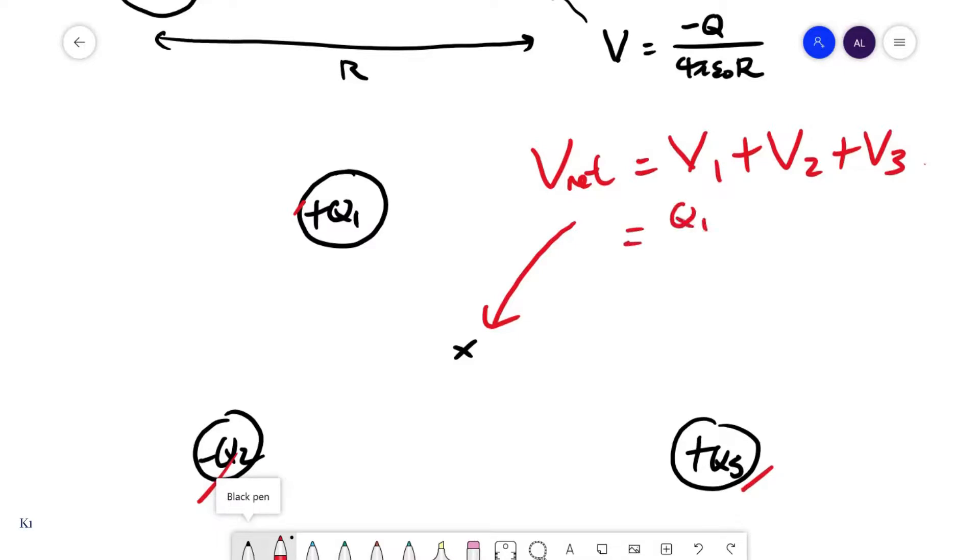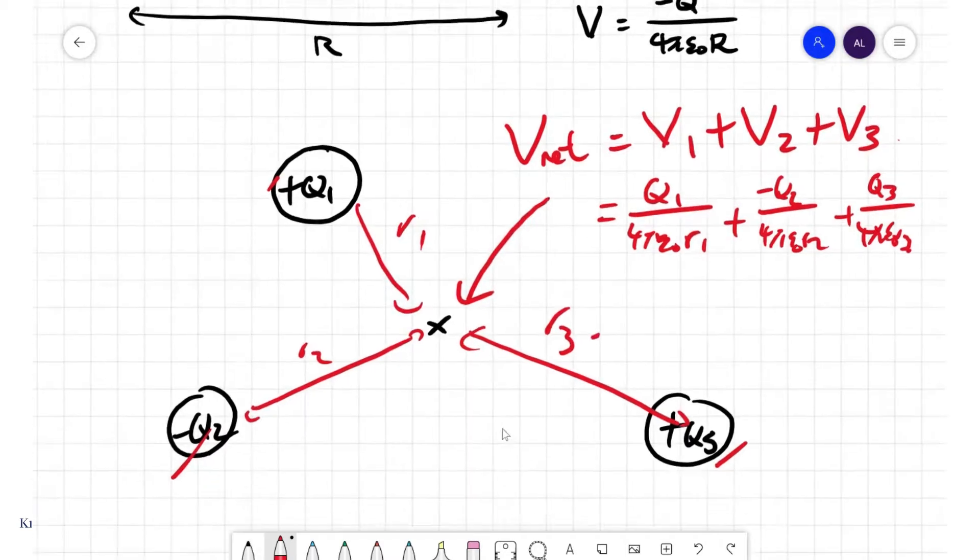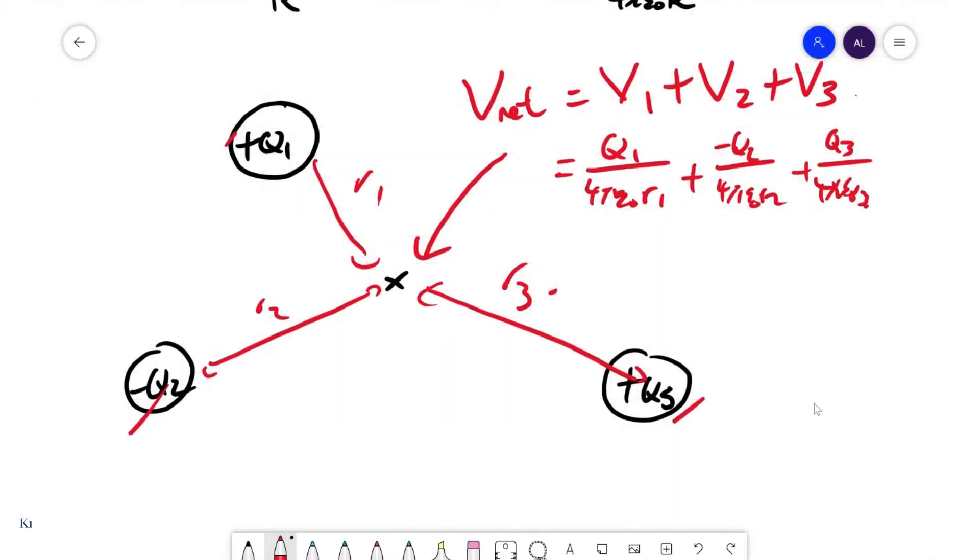This would be Q1 over 4π epsilon R1, plus minus Q2 over 4π epsilon R2, plus Q3 over 4π epsilon R3. Of course that's R1, that's R2, that is R3, and that is what we need to know about the electric potential.